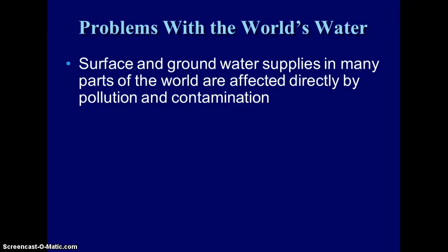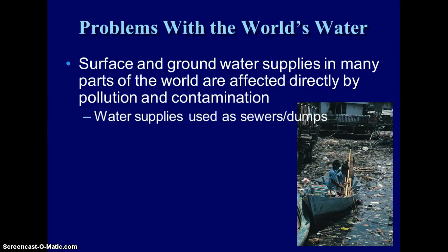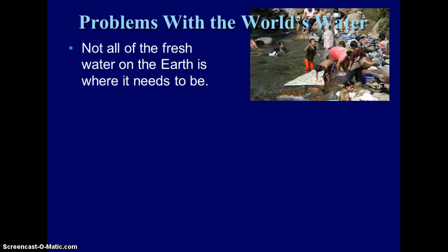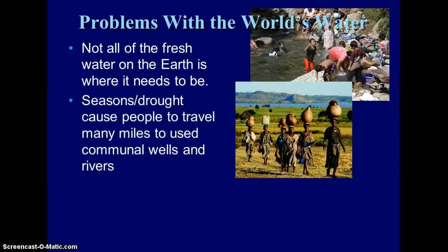Some of the problems of the world's water are directly related to pollution, both surface and groundwater supplies. Sometimes water supplies are used as sewers or dumps when they don't have any services in place. Runoff from cities, factories, and farms can infiltrate through the ground or run off into streams and rivers. Not all the fresh water on earth is where it needs to be — it's not evenly distributed. There are areas where people have to travel miles each day just to get the water they need, either because they're in a dry season, experiencing drought, or they just don't live near an access point.